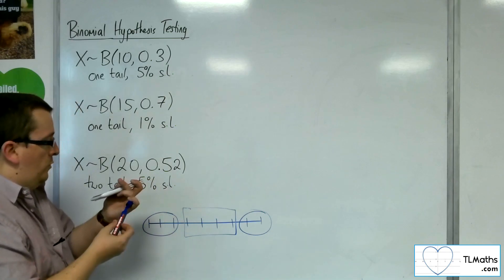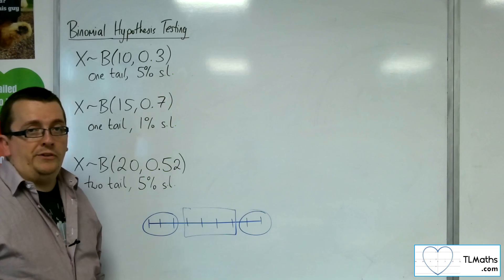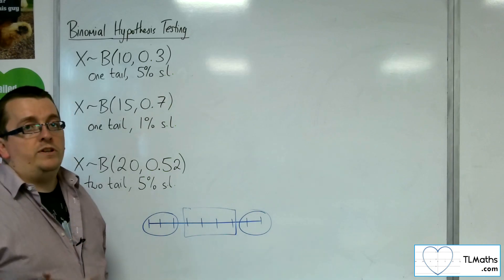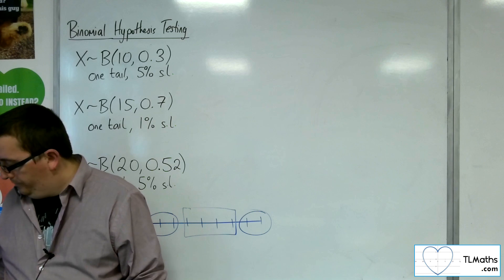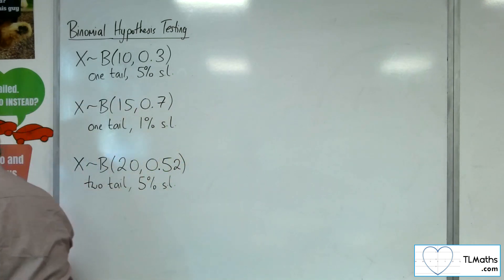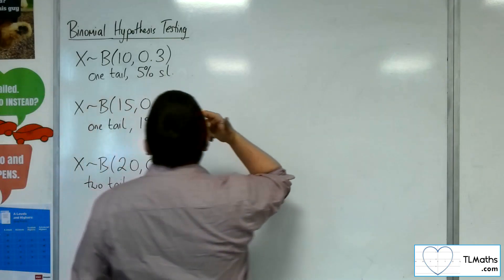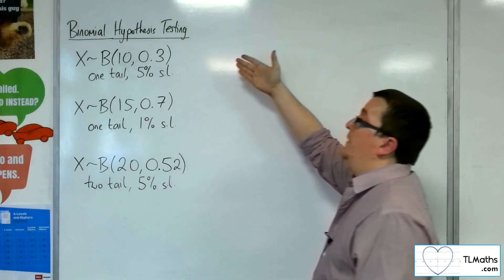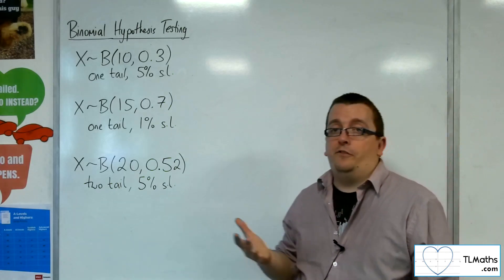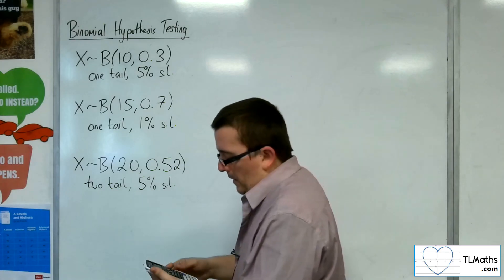The critical region method for hypothesis testing is a perfectly valid way of setting out your hypothesis test, and you can use this method each and every time if you like. So let's say the distribution we're looking at is x binomially distributed with n = 10 and probability 0.3. It's a one-tailed test at the 5% significance level. This is how I would go about it.